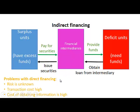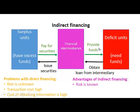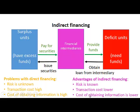Looking at the advantages of indirect financing compared to the problems of direct financing: the risk is known because surplus units know the financial intermediaries, and the intermediaries often know the deficit units — typically their banking clients — and have intimate knowledge of their financial situation. Because financial intermediaries are in the business of providing funds and issuing securities, transaction costs and the cost of obtaining information will also be lower.